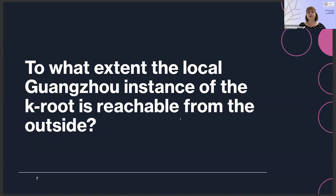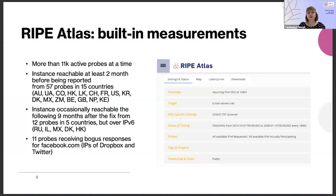The first question we wanted to answer is whether the leak was a one-time event or whether the instance had been reachable from outside for some time. To answer this, we relied on a built-in RIPE Atlas measurement run on all connected probes, which sends the chaos-class TXT query for id.server to the K root, and the response gives the identifier of the anycast instance reached. We analyzed measurements two months before the leak was reported and nine months after. At least two months before being reported, the instance was already reachable from 57 probes in 15 countries. Even after the leak was fixed, the instance would still occasionally leak — this time over IPv6 and from far fewer probes.